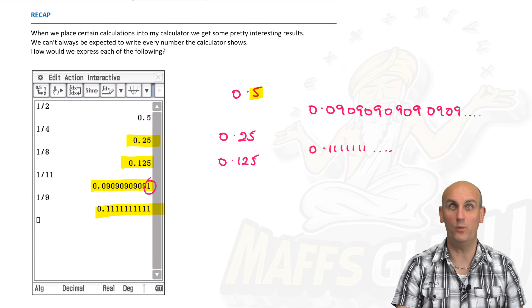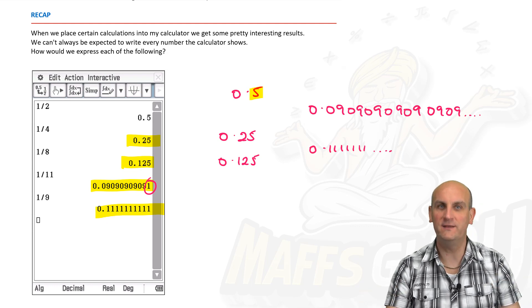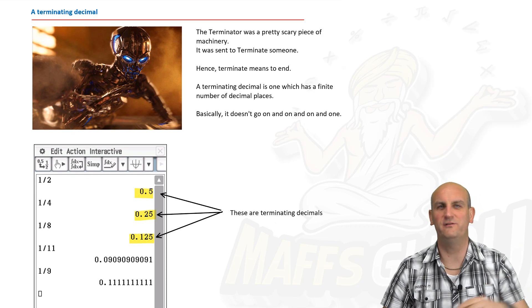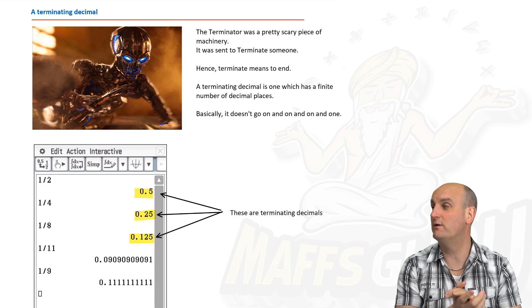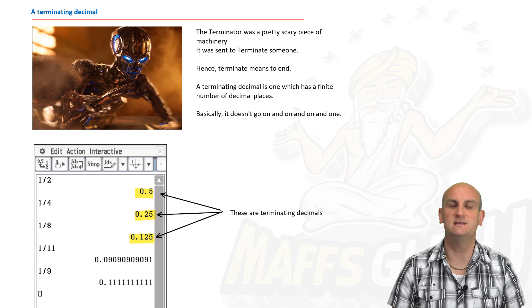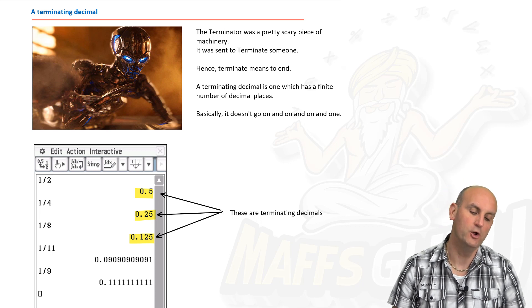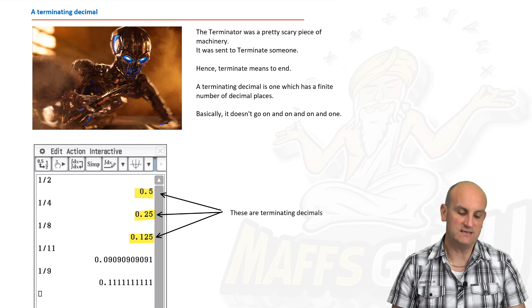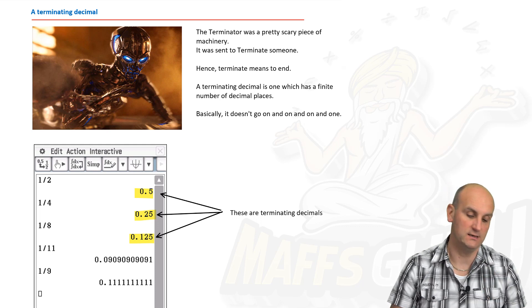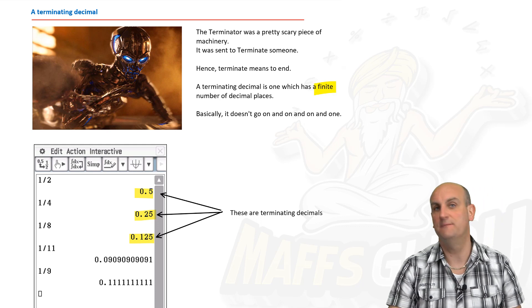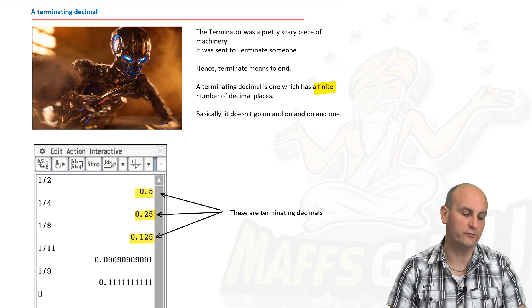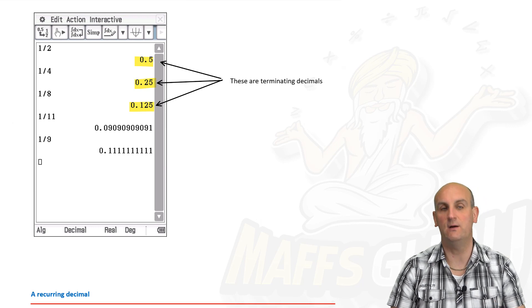Let's start with a terminating decimal. You may remember the Terminator — sent back in time. The point is: a terminating decimal is one that has a finite number of decimal places — basically, it just ends. It may have seven decimal places, but after that it stops.